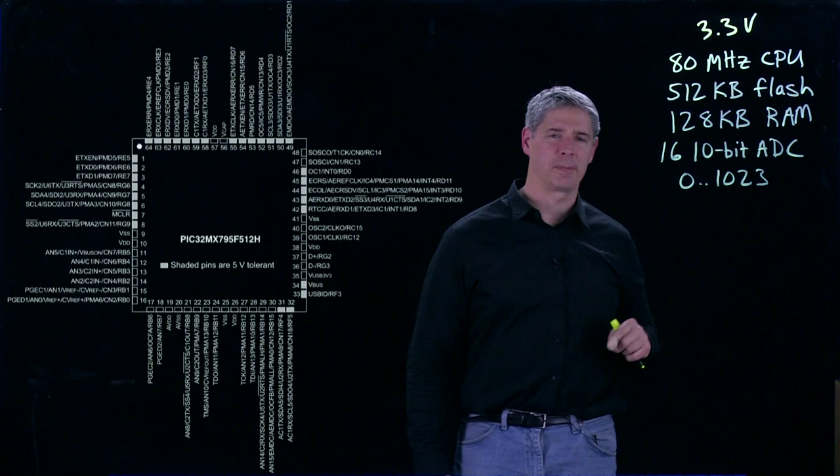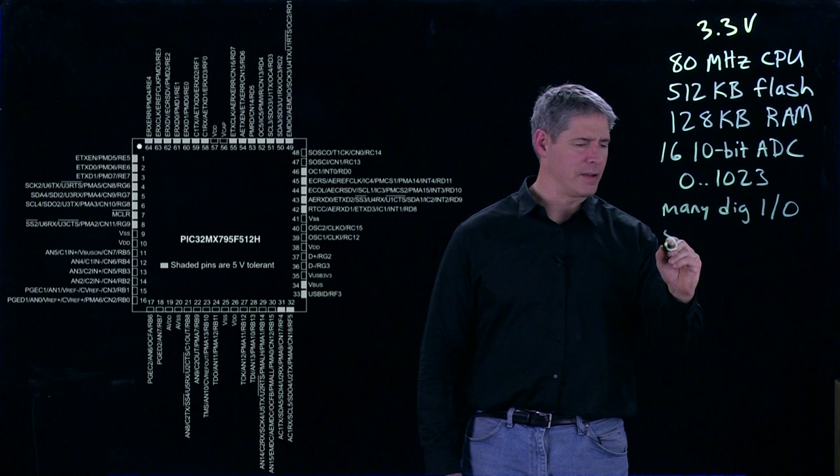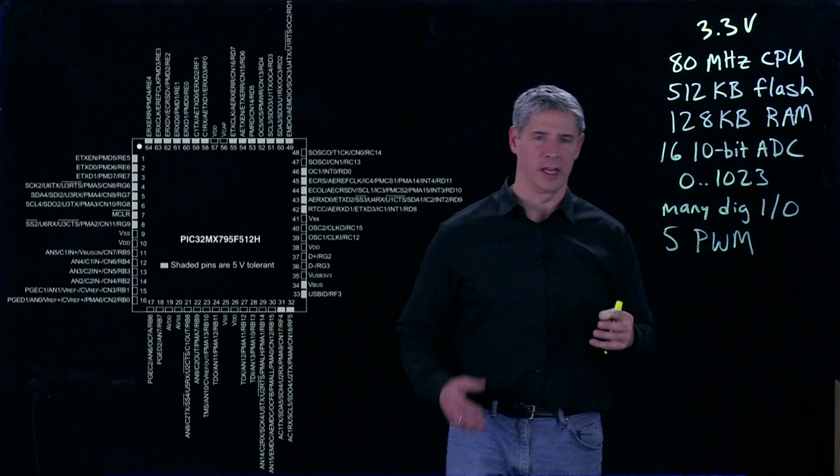This is typically paired with a sensor. There are many digital inputs and outputs, and five pulse width modulation channels. Pulse width modulation is a pulse train of varying frequency and duty cycle that you can control, typically used for things like controlling motors.